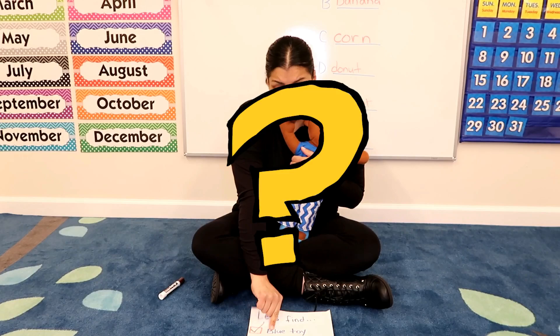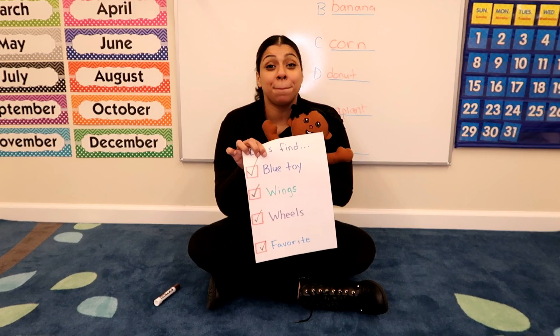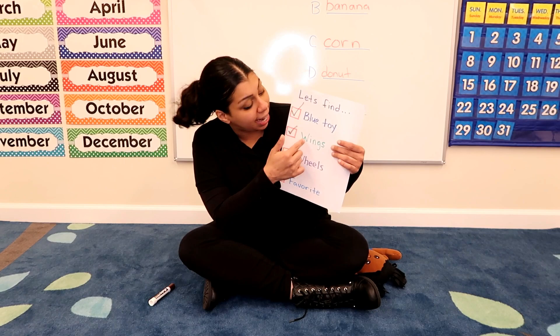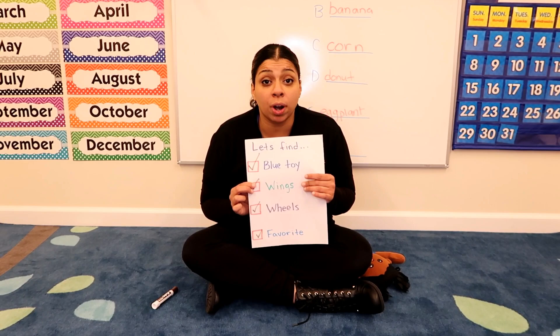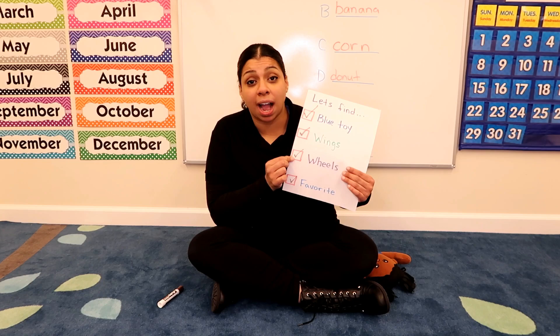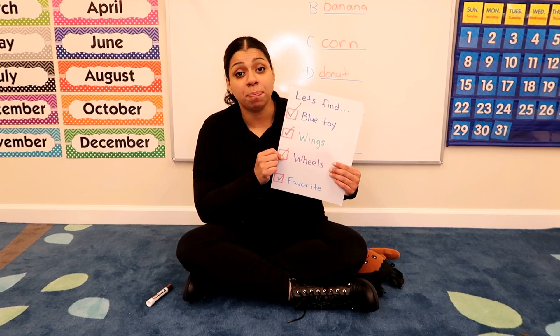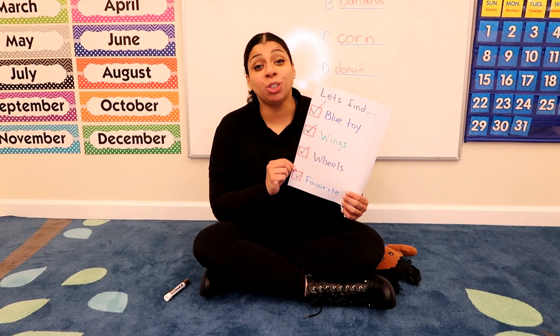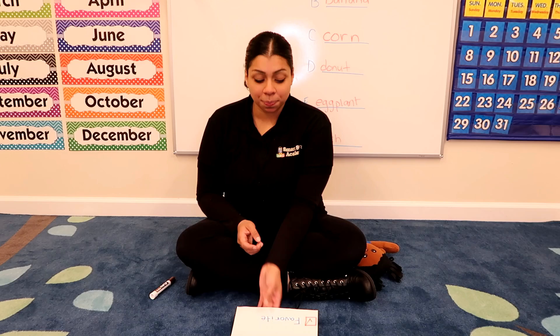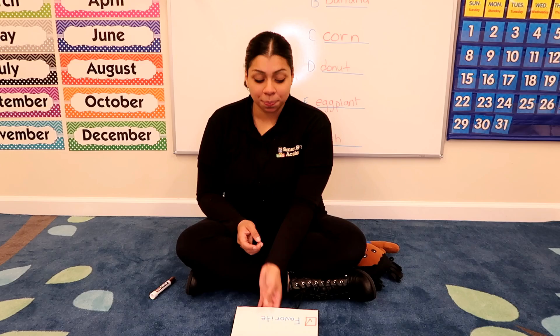So what did you guys find? What blue toy did you find? Do you remember what I found? What about Pete the Cat? Did you find a toy with wings? What kind did you find? Does it have more than two wings, more than three? What did you find that had wheels — was it a car, a motorcycle? How many wheels does your toy have? Can we count them? I can't wait to see your favorite toy. Make sure to clean up all the toys we found. I miss you guys so much and I can't wait to see you again at SSA. Bye guys.